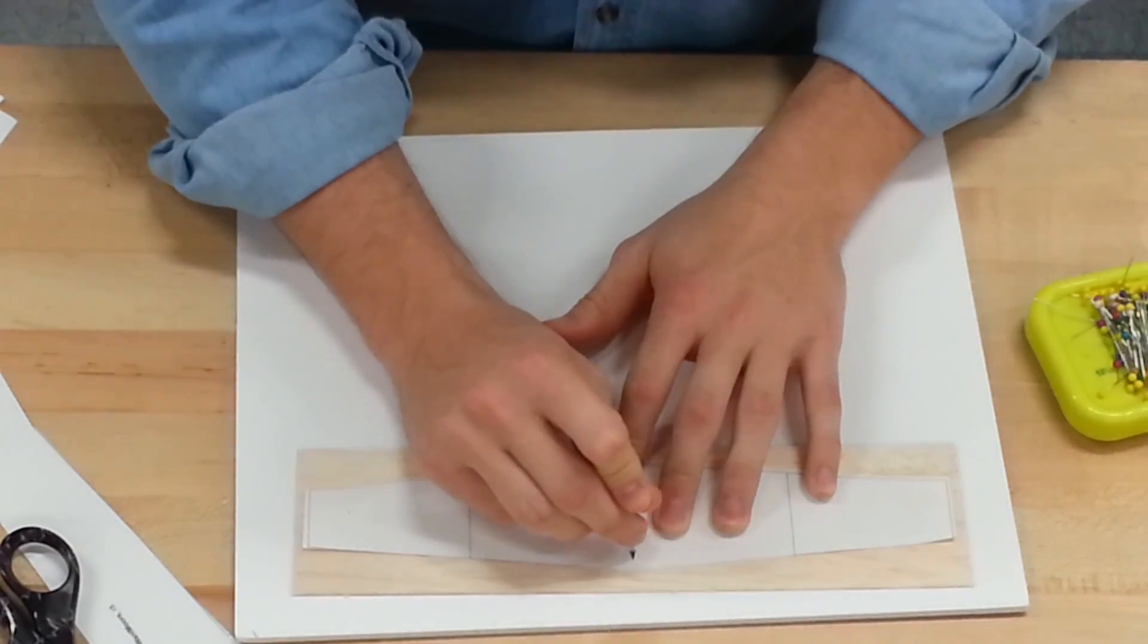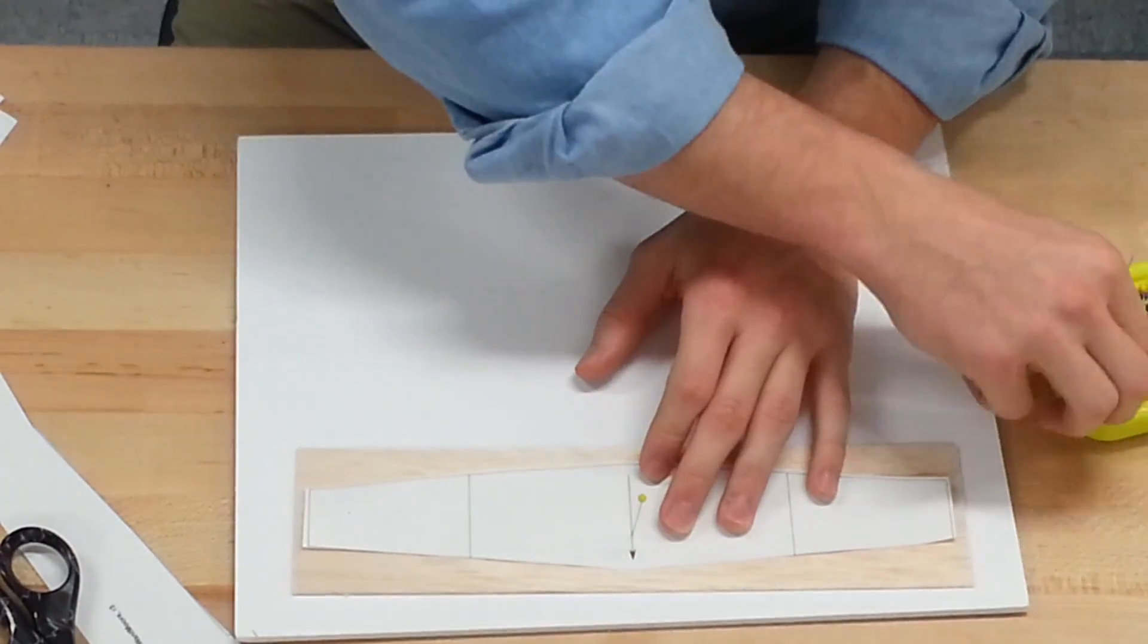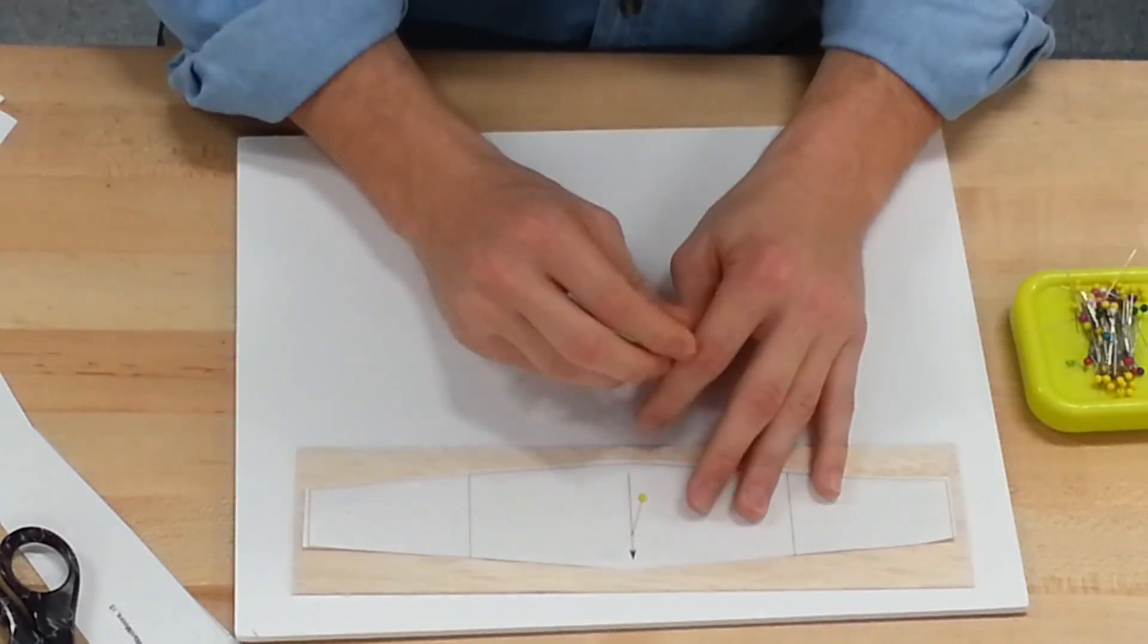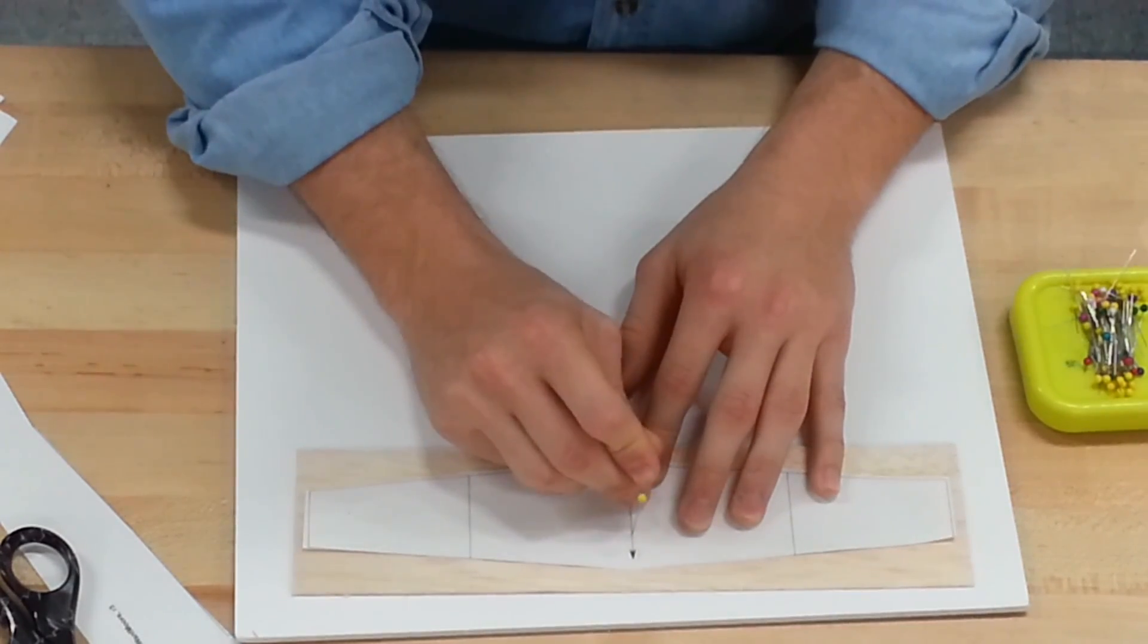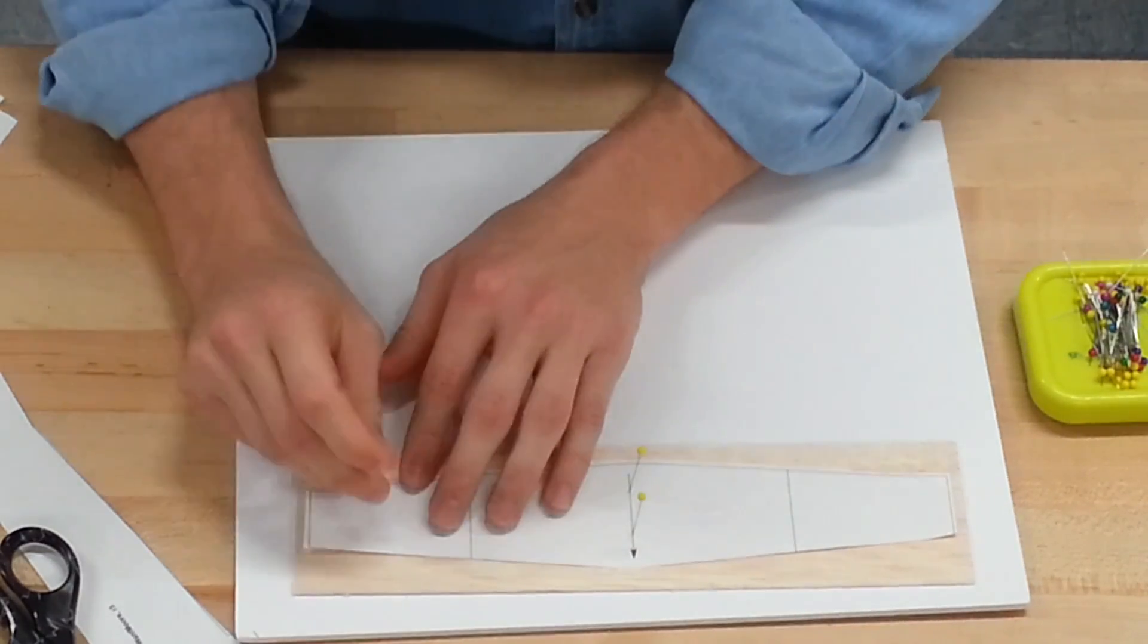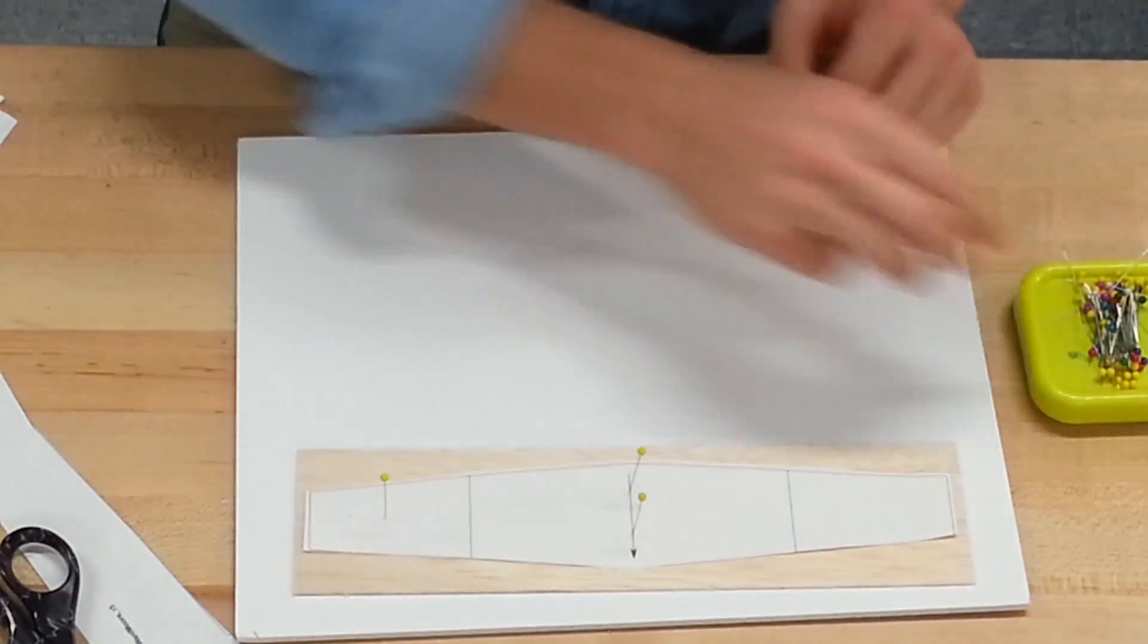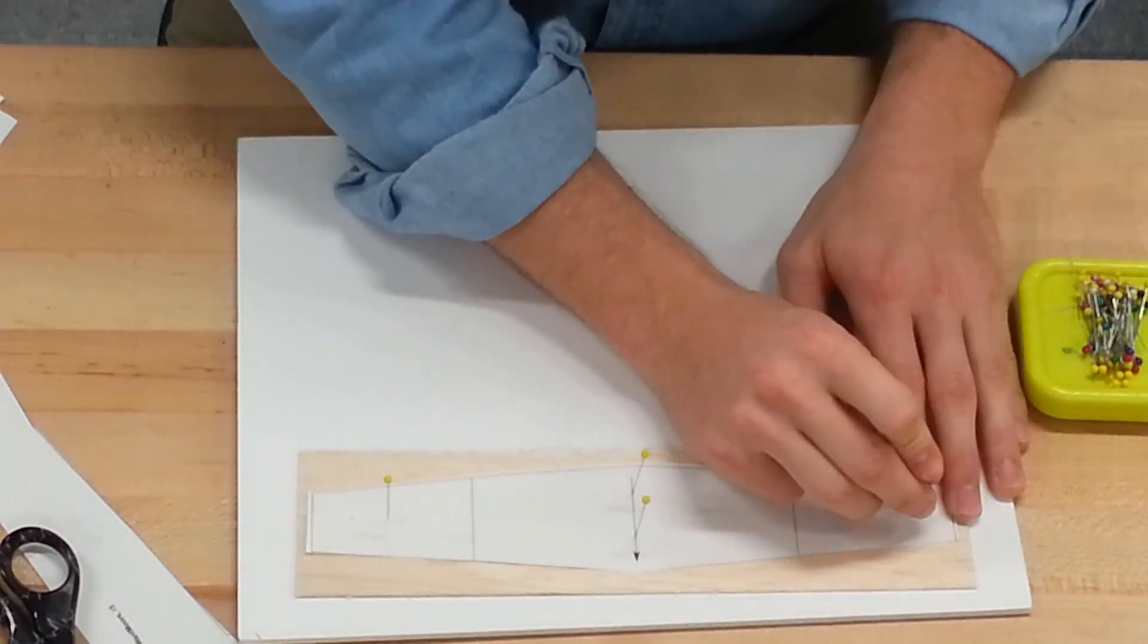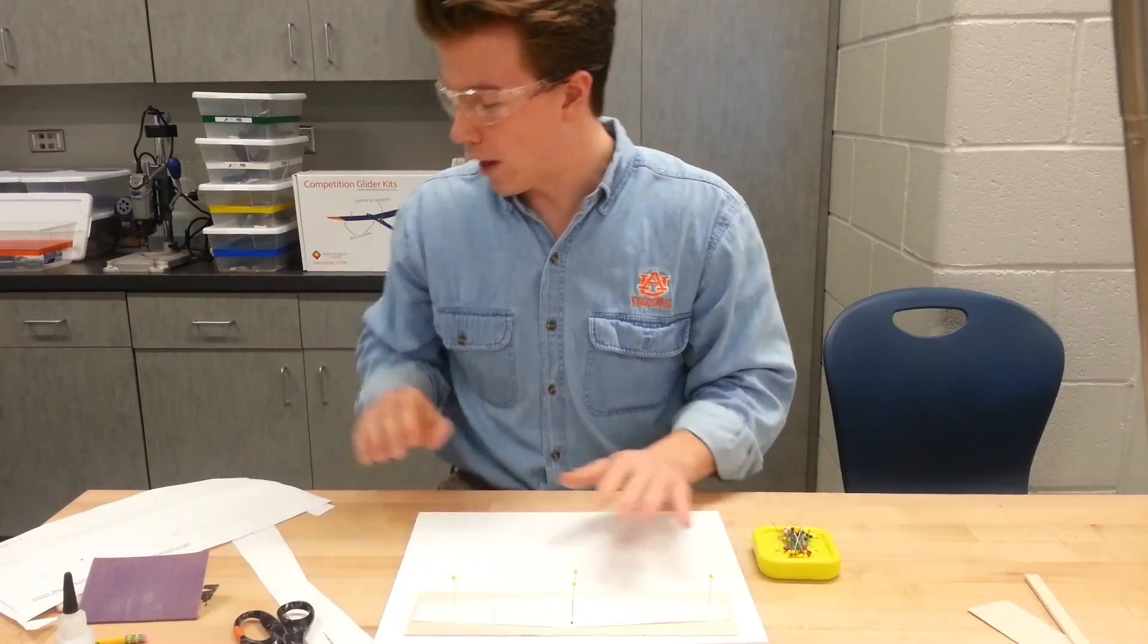So I'm going to put two in the middle first. That way, our paper is not going to go anywhere when we're cutting. And I'm going to put one over here, and one over here.